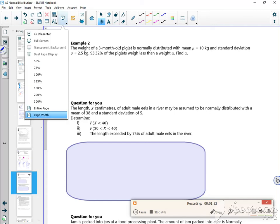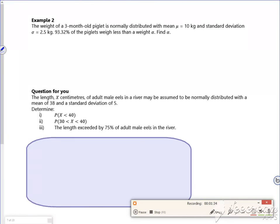So look at number one. Hopefully this will be a bit more straightforward. It says the weight of a three-month-old piglet is normally distributed with a mean of 10 and a standard deviation of 2.5. So X ~ N(10, 2.5²). 93.32% of piglets weigh less than that number, so the probability that X is less than alpha is 0.9332. So it's a left-hand tail.